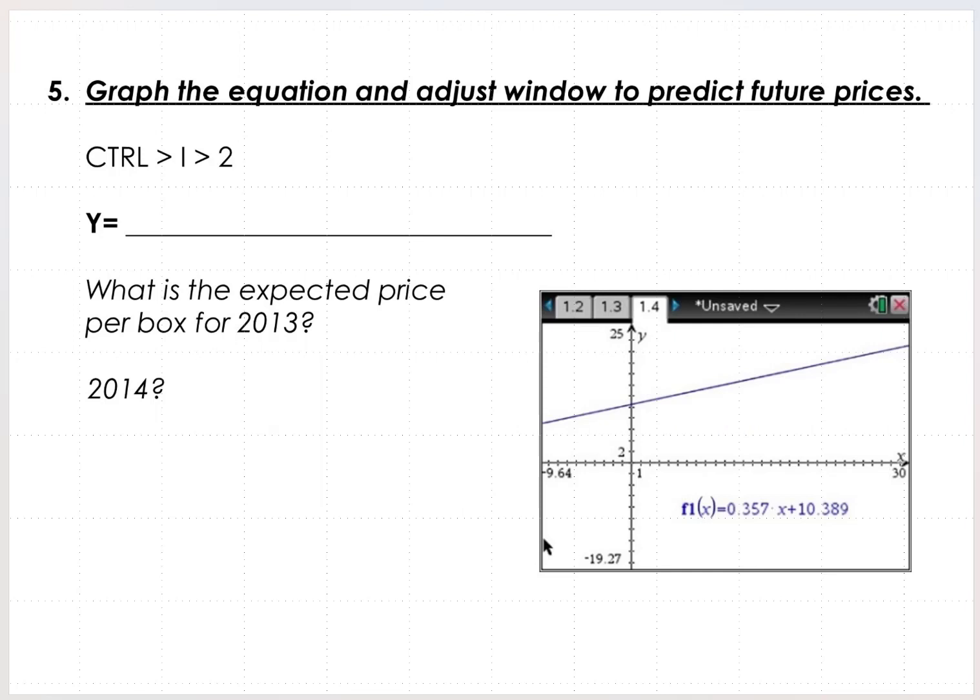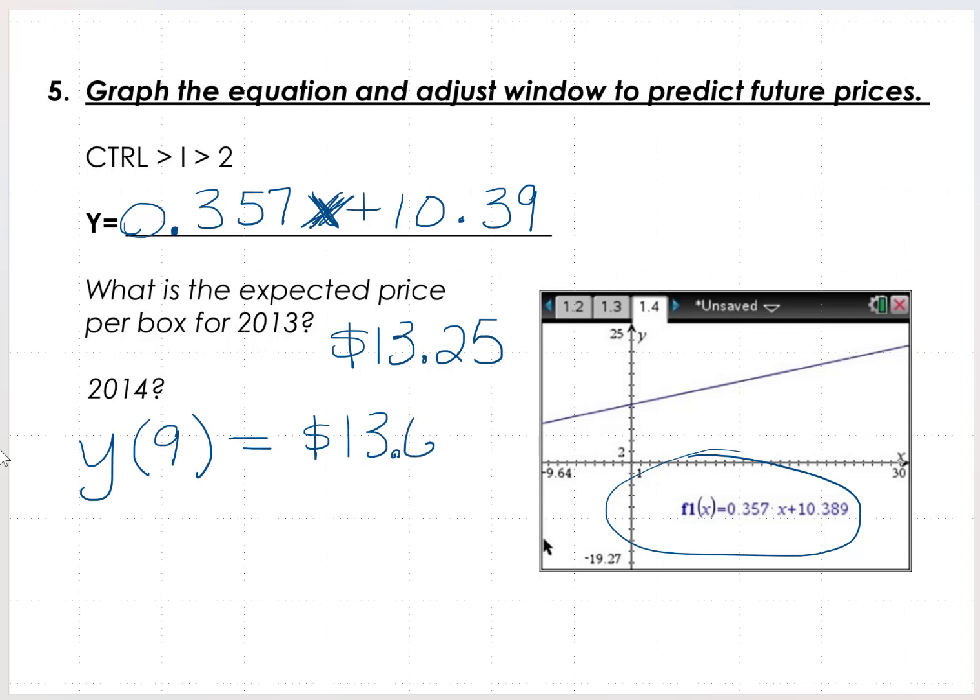So next we're up to this point. What was the equation for the regression line? And you can see that here in our screen. Y equals 0.357x plus $10.39. So we're going to round that up. And then using that value, what's the expected price per box for 2013? So using this equation in place of x, 2013 would represent year 8. And that amount would be $13.25. And 2014 would represent year 9, and that amount would be $13.60.